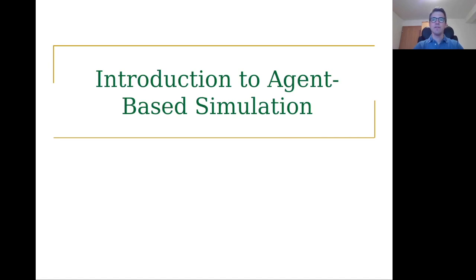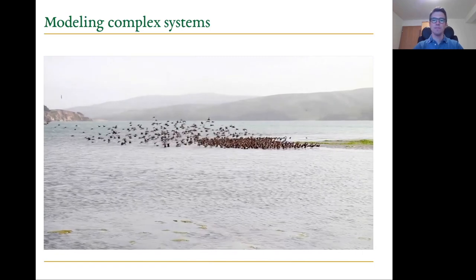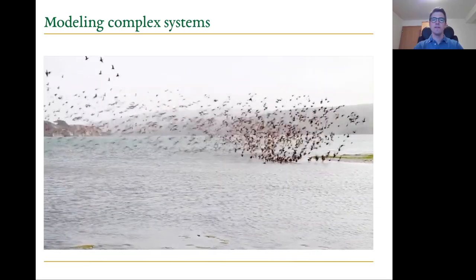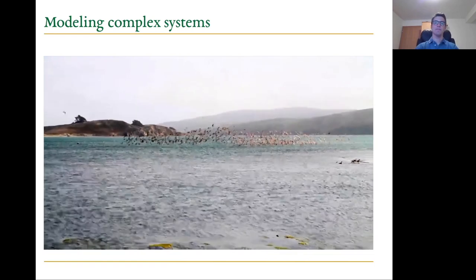Let's first start with a brief introduction of what agent-based simulation is. It is an approach to model complex systems. This video shows the dynamics of a flock of birds, and if we want to model this system, we could try to derive equations that describe the attributes of the swarm, which could be seen as a top-down modeling approach. But in contrast, an agent-based model focuses on the individual elements of the system and their interactions.